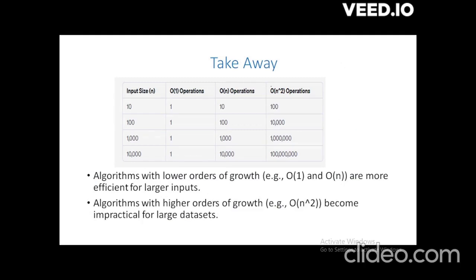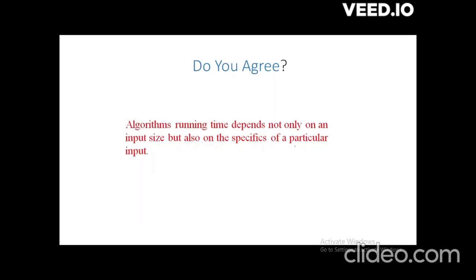The first column represents input size and shows how order of growth increases based on input. It is very explicit that there is no impact of input size for constant time, a linear increase in our second example, and a quadratic increase in the third. When you have lower order of growth like constant or linear operations, it is good for larger input. When you have higher order of growth like quadratic or exponential, it is impractical to apply for larger datasets. Do you agree that an algorithm's running time depends not only on input size but also on the specific characteristics of a particular input?